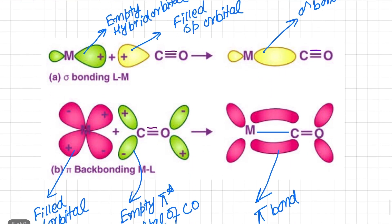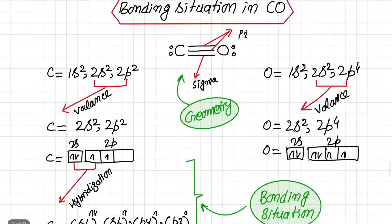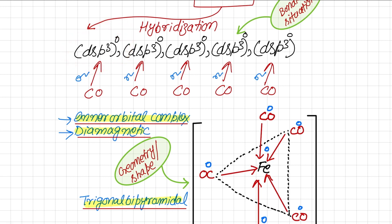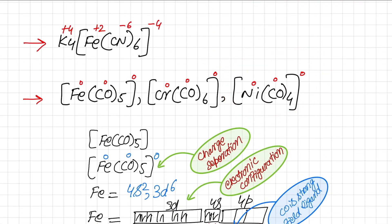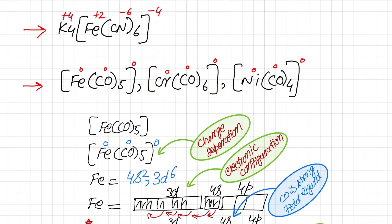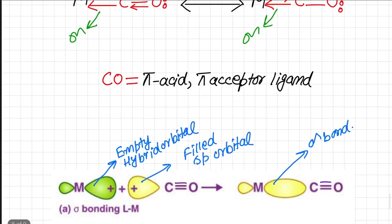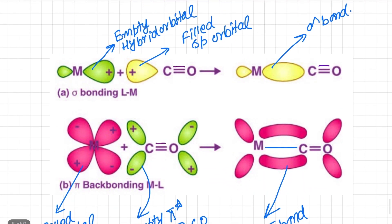We can elaborate further using this diagram. We can see the empty metal hybrid orbital — in the case of iron pentacarbonyl, this is the empty dsp³ hybrid orbital. This empty hybrid orbital will change depending on the metal. For example, in nickel tetracarbonyl the hybridization is sp³, so the empty hybrid orbital will be sp³. Similarly, in chromium hexacarbonyl the hybridization will be d²sp³. The nature of the empty hybrid orbital changes depending on the metal and the geometry of the overall complex. The sp hybrid orbital of carbon, which contains the lone pair, overlaps with this empty metal hybrid orbital, and a sigma bond is formed.